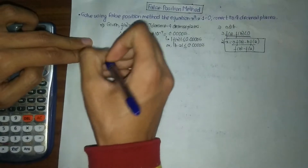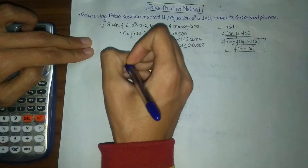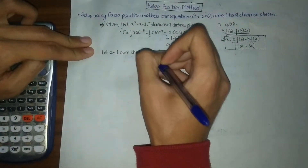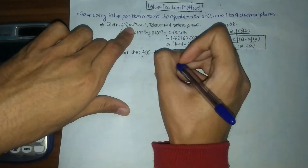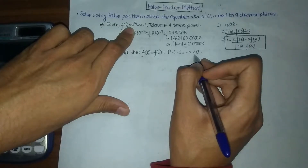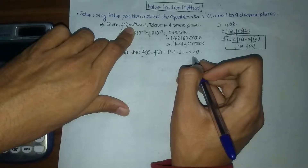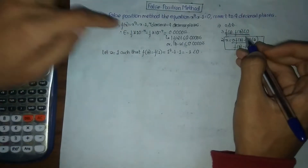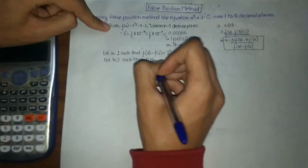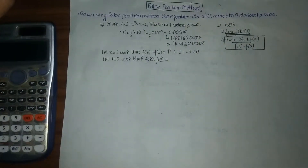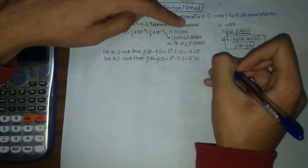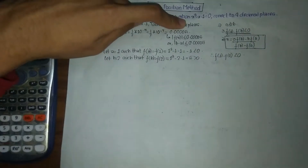We let a equal to 1 as our first approximation. f(a) equals f(1) equals 1 cube minus 1 minus 1, which is minus 1, less than zero. Now we need to choose b such that f(b) must be greater than 0, so that f(a) times f(b) will be less than 0. We choose b as 2, so f(b) equals f(2) equals 2 cubed minus 2 minus 1 which equals 5, greater than 0. Therefore f(1) times f(2) equals minus 5, which is less than 0.